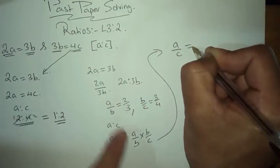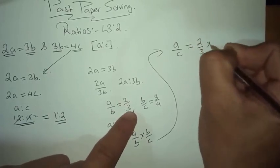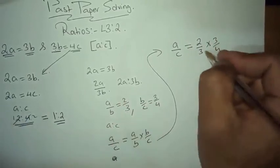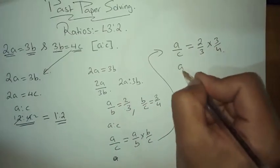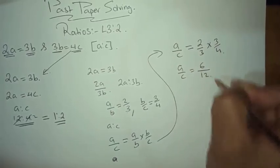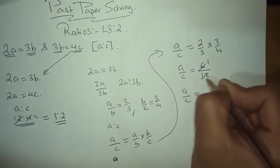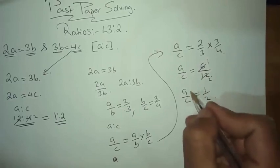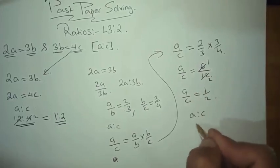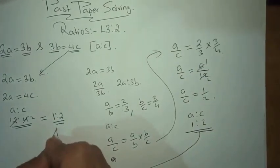A over b is 2 over 3, into b over c is 3 over 4. So a over c equals 2 times 3 over 3 times 4, which is 6 over 12. Simplified: a over c equals 1 over 2. So a is equal to 1, c is equal to 2. A is to c is 1 is to 2.